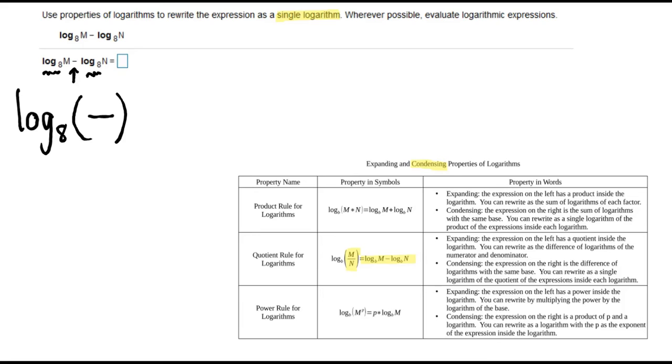The m goes to the numerator because the log is positive, and the n goes to the denominator because that log is negative. So we condense to get log base 8 of m divided by n.